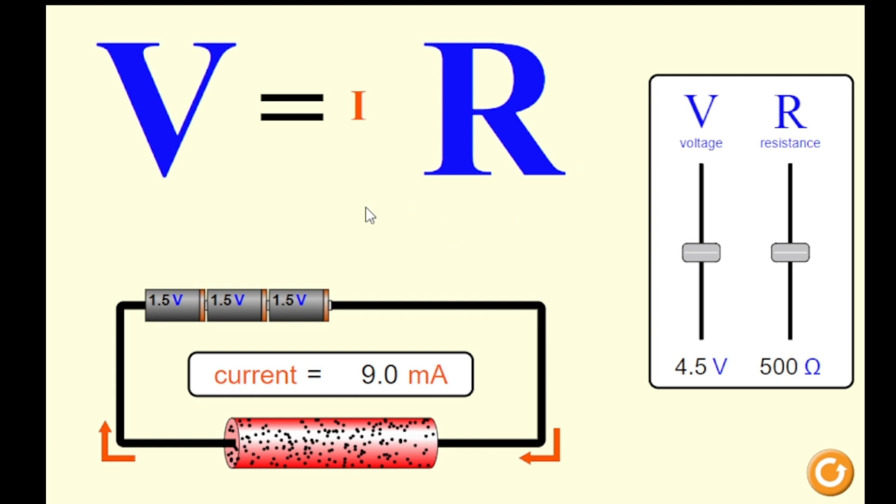If we recall the formula for Ohm's Law, the current is equal to your voltage over the resistance. In this simulation, we define Ohm's Law in terms of voltage, so your voltage is equal to your current times your resistance.